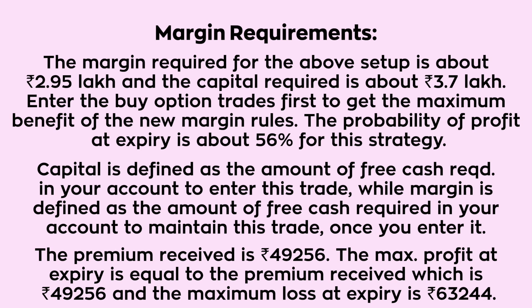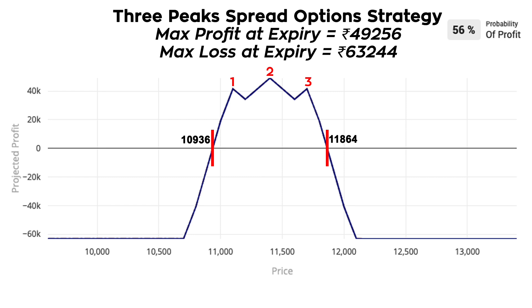The maximum profit at expiry equals the premium received, which is Rs 49,256, and the maximum loss at expiry is Rs 63,244. From the risk graph it is evident that the strategy has a wide profit zone of about 900 points, which explains the decent probability of profit. There are two breakeven points: the upper breakeven is at 11,864 and the lower breakeven is at 10,936.